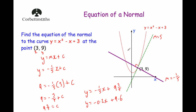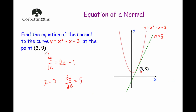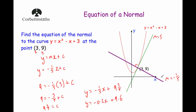So to find the equation of a normal to a curve: first, differentiate to find dy/dx; then substitute in the x value — that tells you the gradient of the tangent; then do the negative reciprocal of that to find the gradient of the normal; then substitute that into y equals mx plus c; and finally, put in the point you know into y equals mx plus c to find c, and that gives you the equation of the normal.